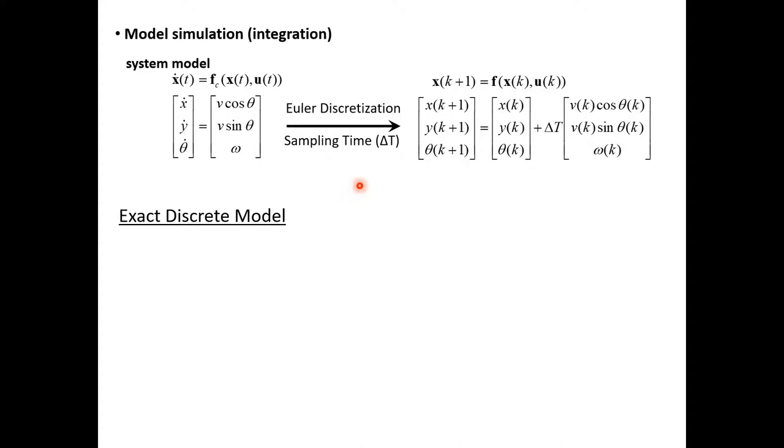Again, we previously used the Euler method to approximate the solution of the system differential equation. In Euler we assume that the derivative of the system, which is f(x,u) here, is constant over the whole sampling time Δt. That's why we simply multiply the derivative by the sampling time and add this to the current state to get an expression for the next state. This approximation is actually a very coarse approximation, especially when we use a large sampling time Δt.